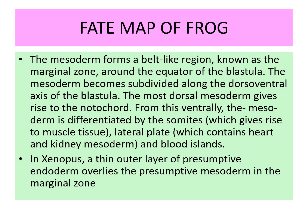The mesoderm forms a belt-like region known as the marginal zone around the equator of the blastula. The mesoderm is subdivided along the dorsal-ventral axis of the blastula; the most dorsal mesoderm gives rise to the notochord. From the ventral end, the mesoderm is differentiated into somites which give rise to muscle tissue, lateral plate which contains heart and kidney mesoderm, and the blood islands. In Xenopus, the thin outer layer of presumptive endoderm overlies the presumptive mesoderm in the marginal zone.